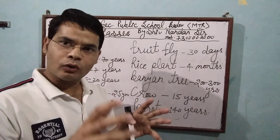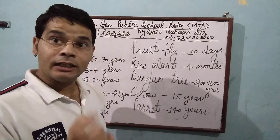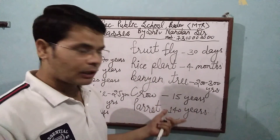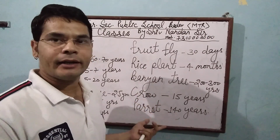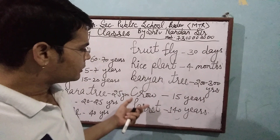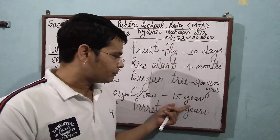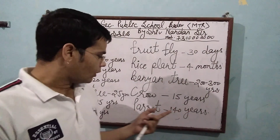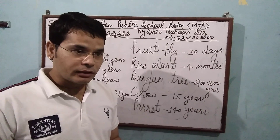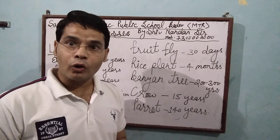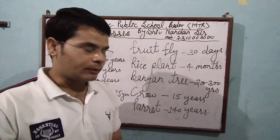The first important thing we can observe is that life spans vary greatly. There are many differences between the life spans of different organisms — for example, the crow and the parrot. The crow lives 15 to 25 years, and the parrot lives 140 years. This means life span does not depend on the size of an organism.